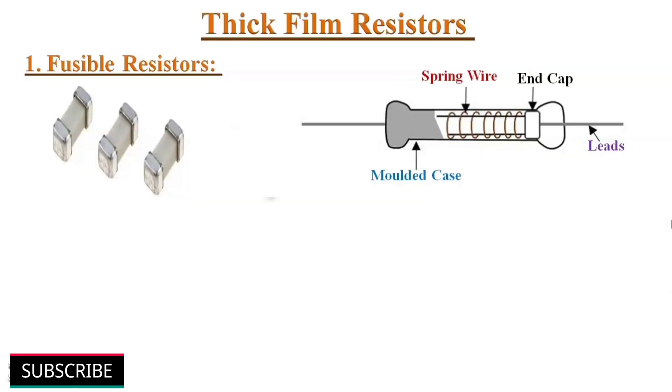First type of thick film resistors is fusible resistors. These resistors are same like wire wound resistors. Fusible resistors perform double jobs. Means they act like a fuse along with providing resistance in the circuit. The resistance value of fusible resistors is less than 10 ohms. They are widely used in TV sets and expensive electronic circuits to limit the current.